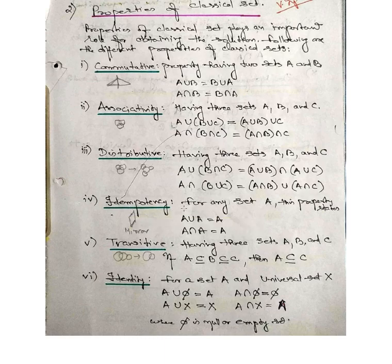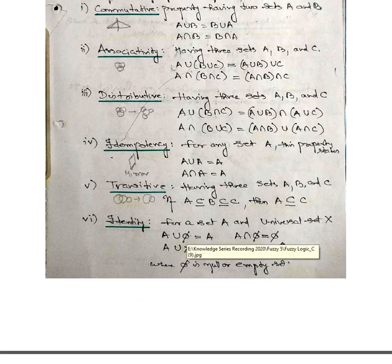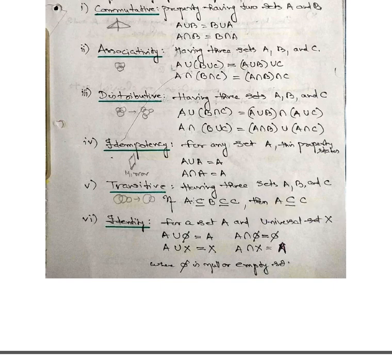Idempotency: for a set, A union A equals A, and A intersection A equals A — it is like seeing the same image on both sides of a mirror. Transitive property for three sets A, B, C: if A is a subset of B and B is a subset of C, then A is a subset of C, because all elements of A are in B and also in C.